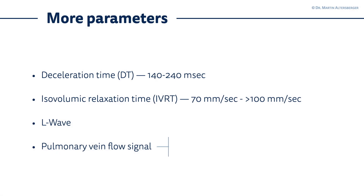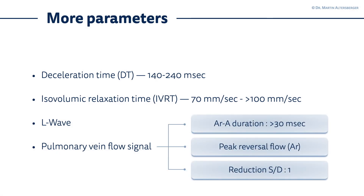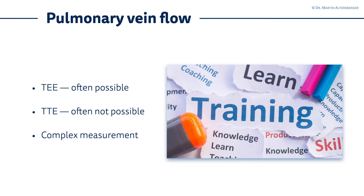The pulmonary vein flow signal is a very complex measurement. You can measure the AR to A duration above 30 milliseconds, the peak reversal flow (the AR per se), and the reduction of S to D — if that ratio is one, it's pathological. In TEE it's quite often possible to measure if you know how. In TTE, it's often not possible — it's just not easy to get this signal. You would delineate the apical 4-chamber view and at the roof of the left atrium you see the pulmonary veins entering. Specifically, the right upper pulmonary vein is where you would most likely get this signal, but it's very complex even in optimal patients.